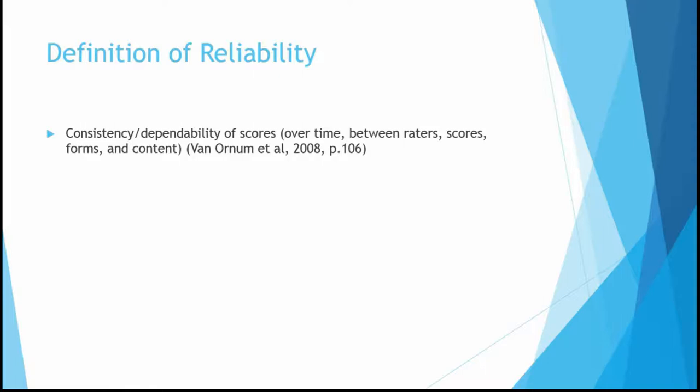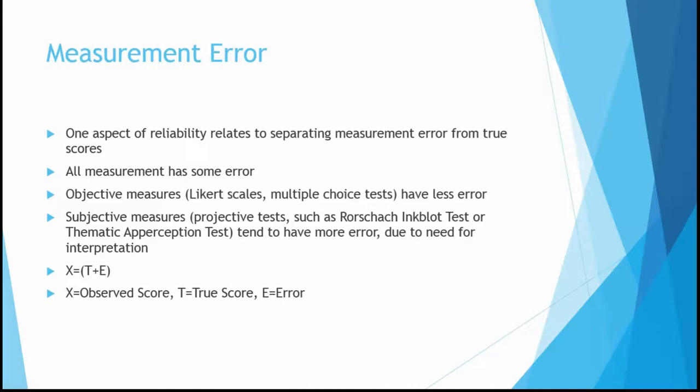All the other things I mentioned play into it, but that's really the crux of what reliability is. One thing that makes reliability difficult to ascertain is the idea of error. This makes it really difficult to know whether a measure is reliable. One thing we need to do is separate measurement error from somebody's true score. All measurement has some error, but some types of measures have less error than others. Objective measures — those not interpreted by the person giving the test — tend to have less error.